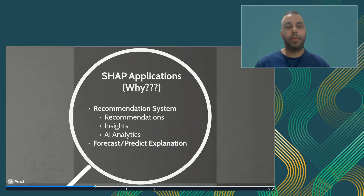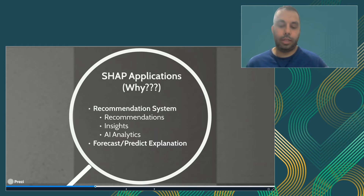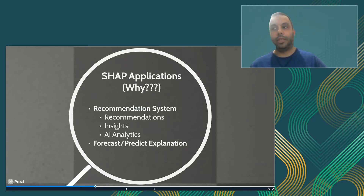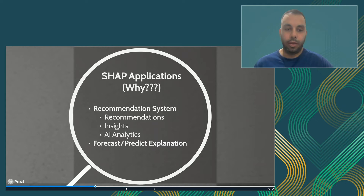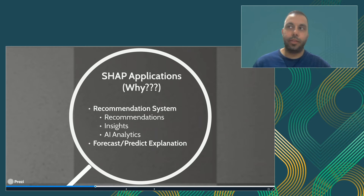Let's start with SHAP applications, or why we are going to use it. Today, SHAP is mainly used for explainable models — to explain the predictions that our machine learning models give. For example, in AWS SageMaker, they are using SHAP to explain the predictions as a debugger tool for the models built by using this platform. So the main usage today for SHAP is to explain our predictions, for example, a random forest model, to explain the predictions made by the model.